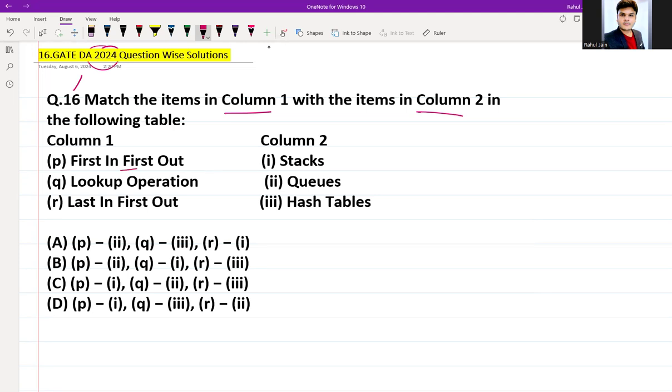First In First Out - obviously you know FIFO property, that is Queue. Queue data structure has FIFO property, First In First Out, so we can match this particular P with second Q.